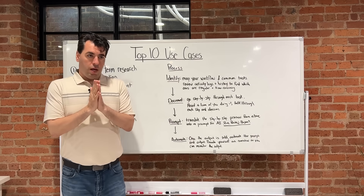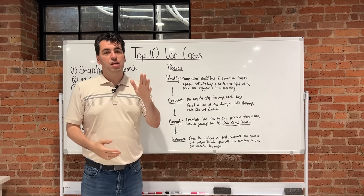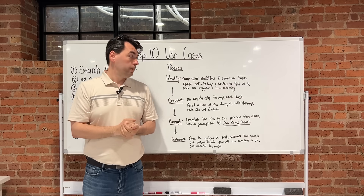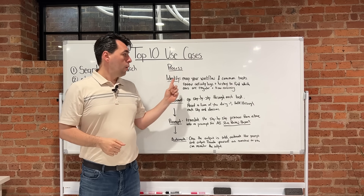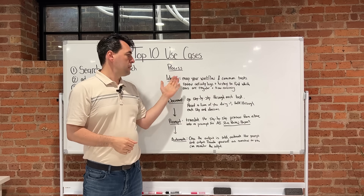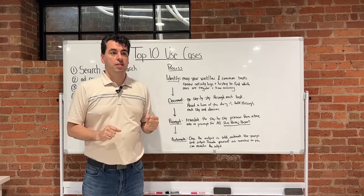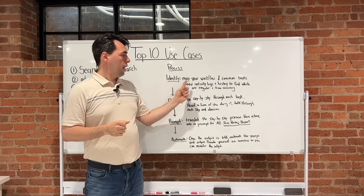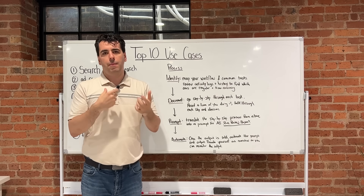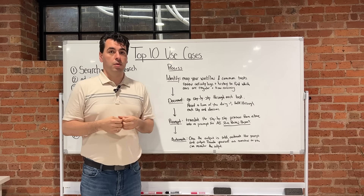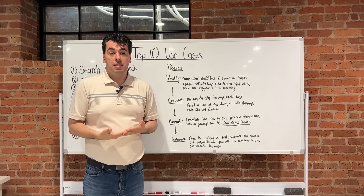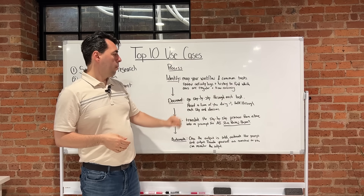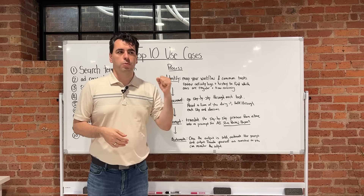Once you've found the use case, the question is: how do you go from this is a cool idea to this is how I make it work in my workflow? Here's the process we use. Number one, identify your workflow — map it out. What is the process you go through to manage a PPC account? What do you do every week, every month, every quarter? Then review your activity logs and change history to find out how much time these things are actually taking. Search terms reports and adding negative keywords, for instance, can take hours every single week for a mid-size to large PPC account. That's the reality.